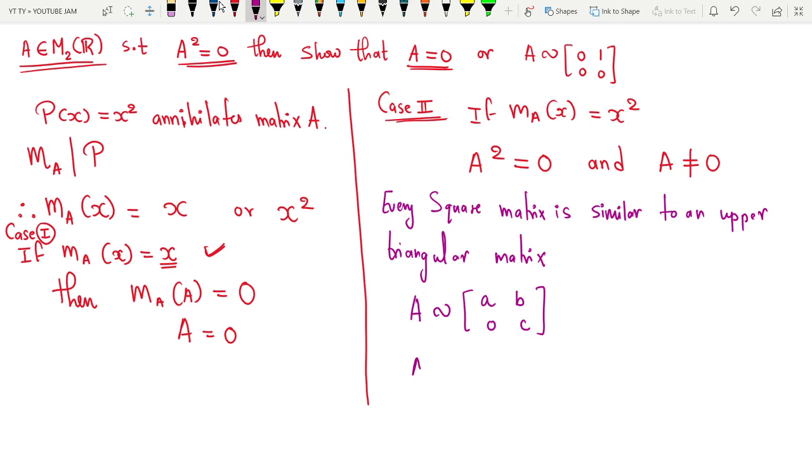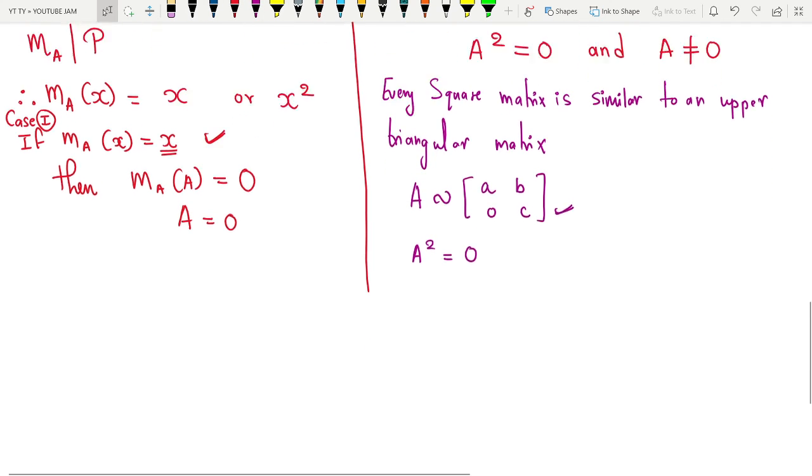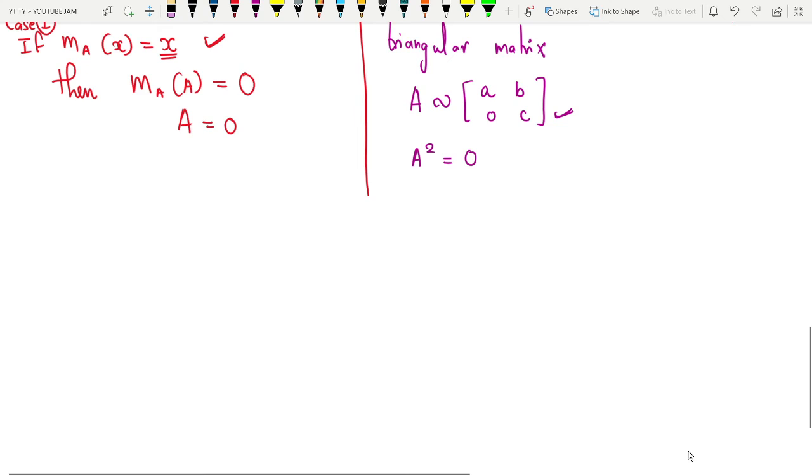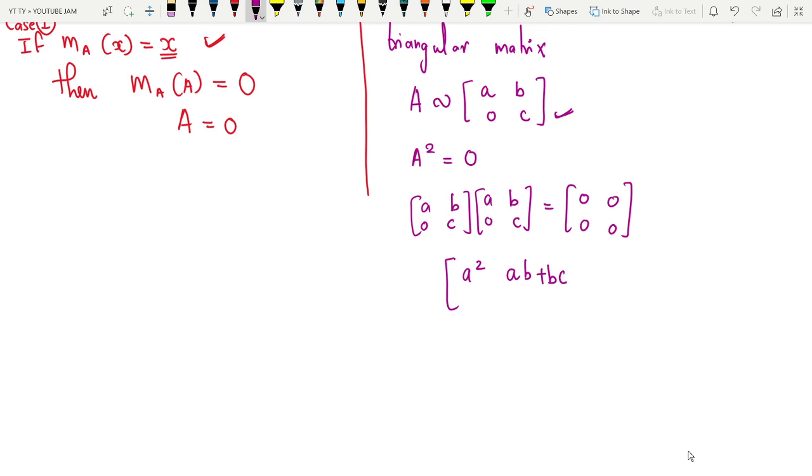Also we know that A² = 0. That means if matrix A² is 0, then the square of this must also be 0. So if I do the square of it, it is [a b; 0 c]·[a b; 0 c], which is the 0 matrix [0 0; 0 0]. If I multiply these two matrices, I get [a² ab+bc; 0 c²] = [0 0; 0 0].